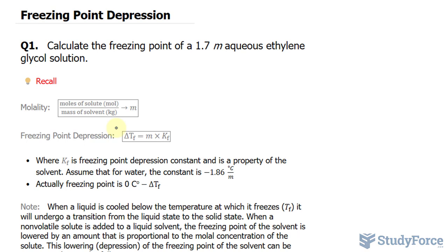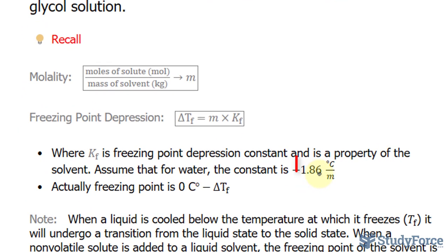In addition, you'll need to know the formula for freezing point depression, which is the change of the temperature is equal to the molality of the solute times a constant, which is represented by K sub F. For water, that constant is 1.86, and the units as shown are Celsius per molal.